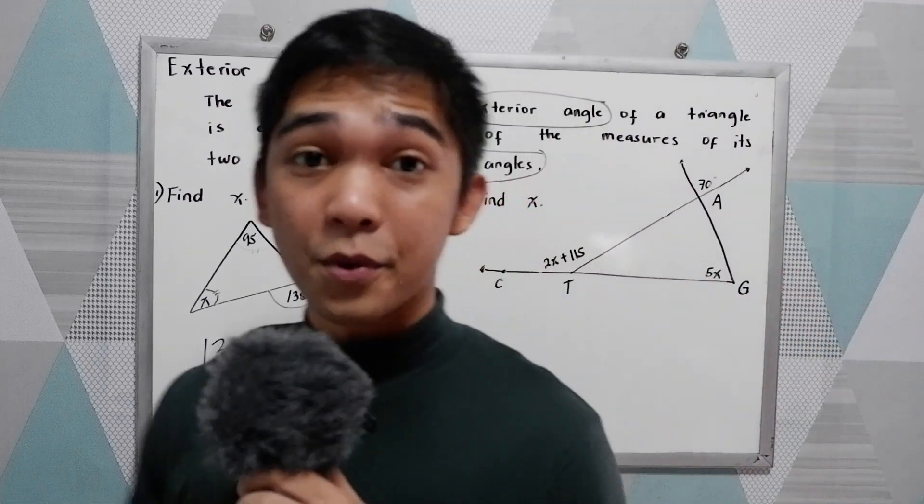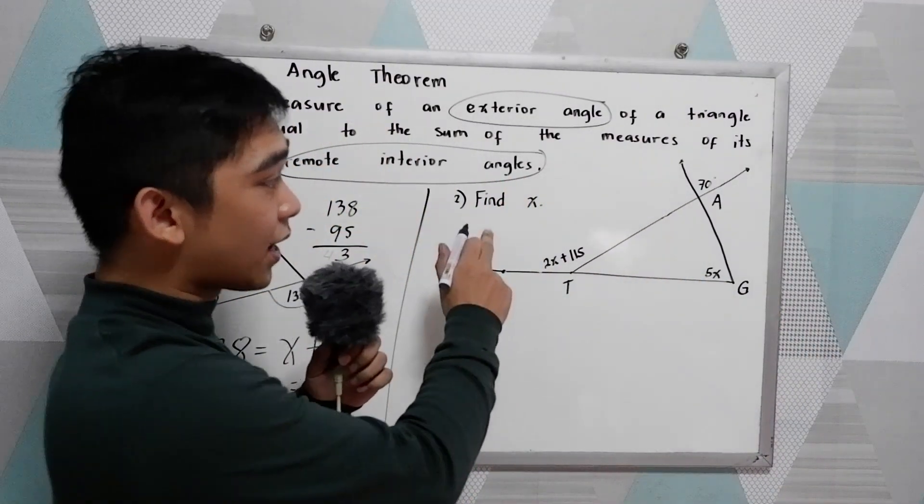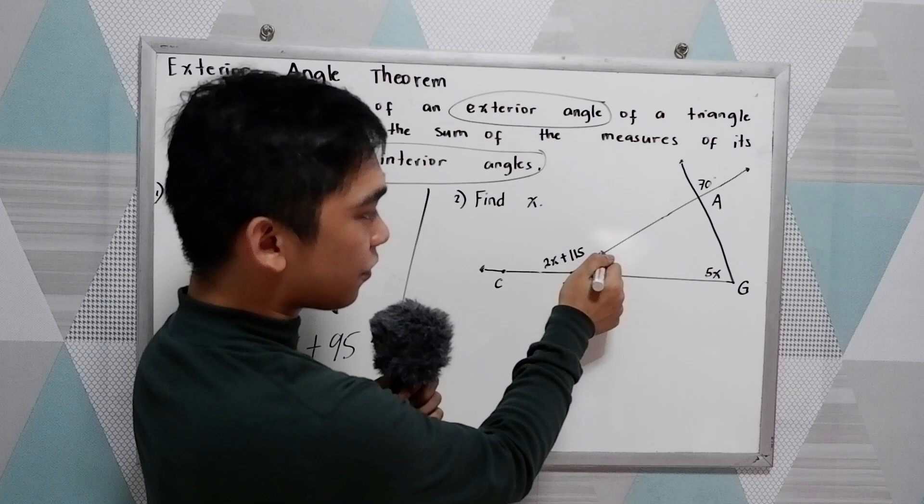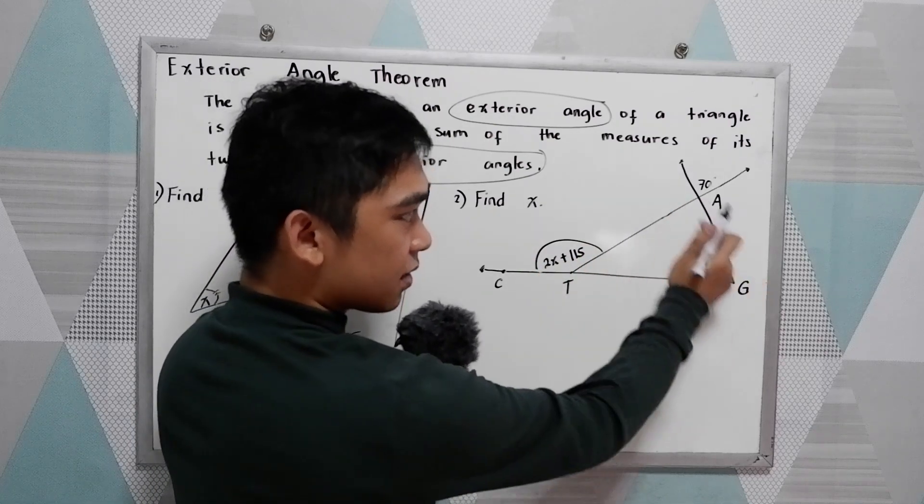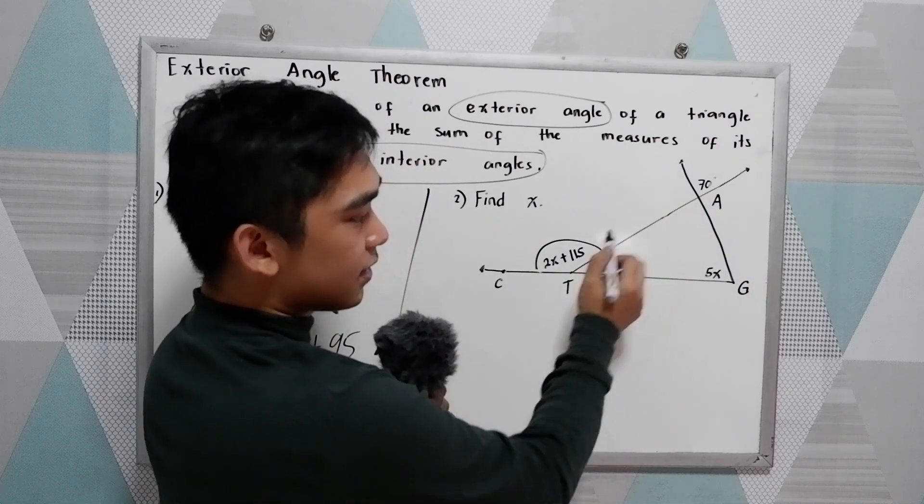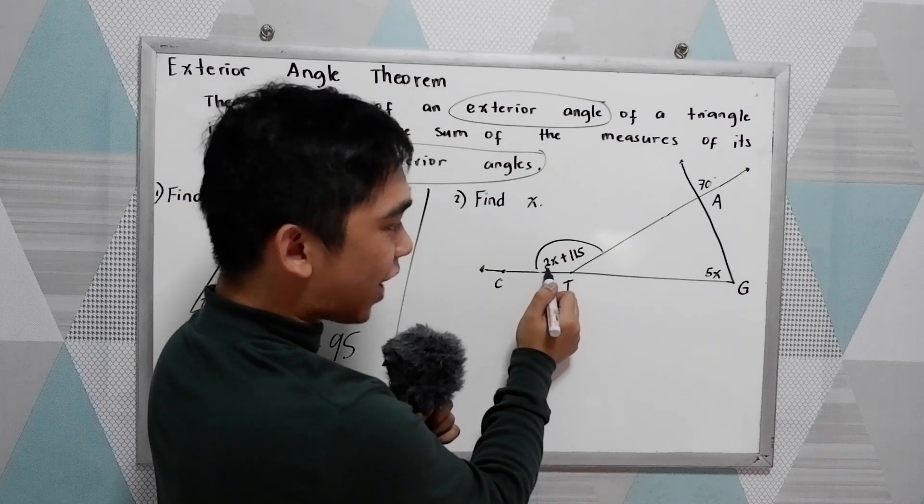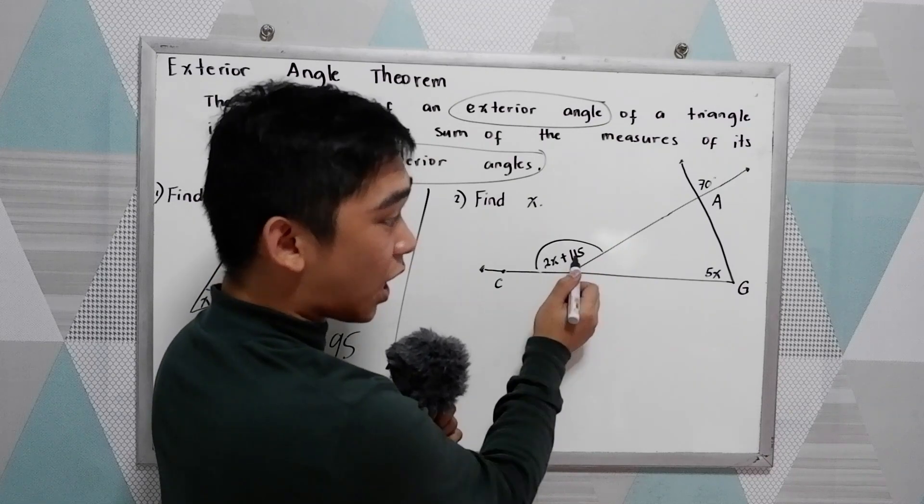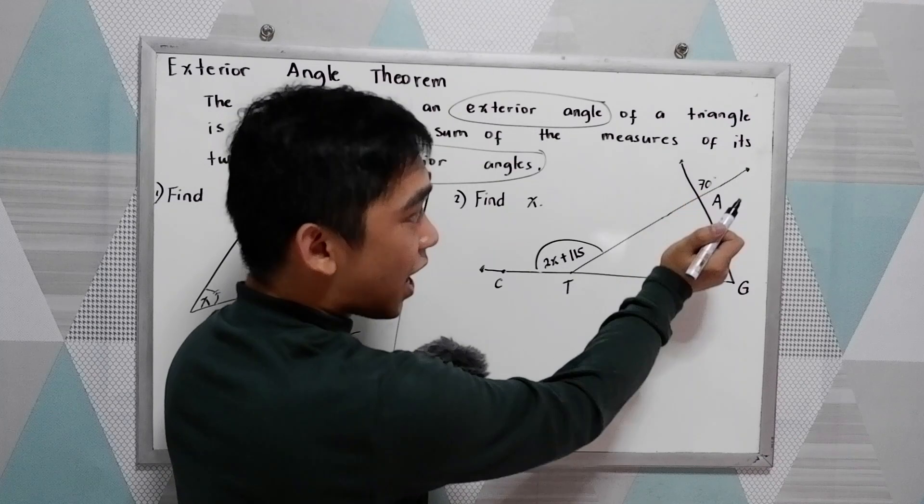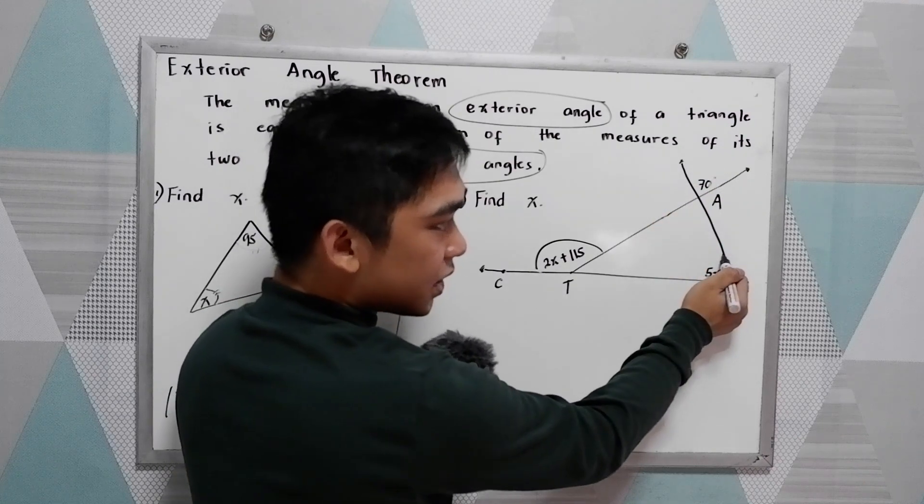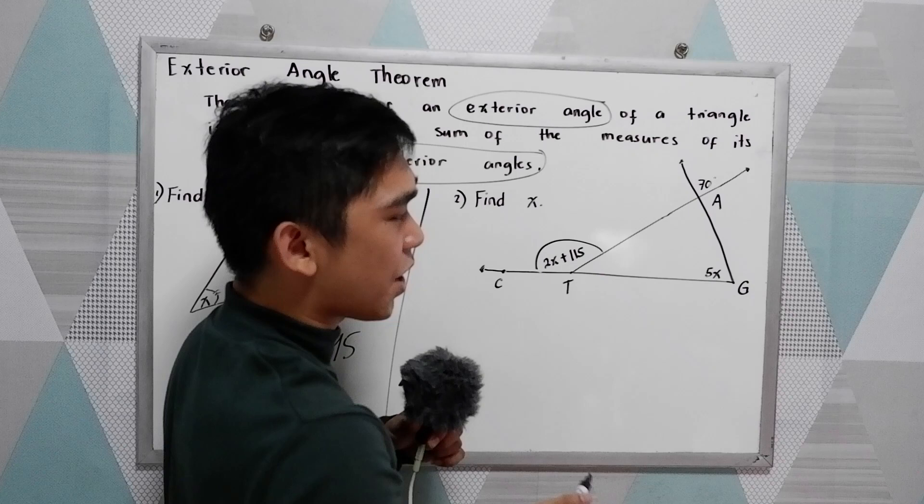Second example, number two. Again, solve for X. We have the following given. We have our triangle here. Then exterior angle 2X plus 15, and another exterior angle 70 degrees. And we have here 5X, our interior angle.